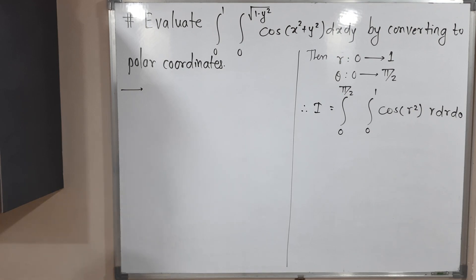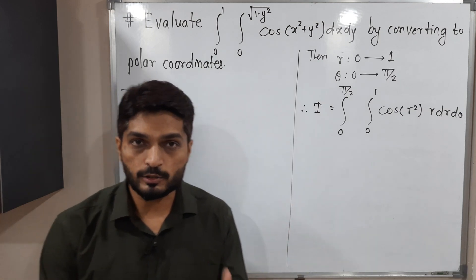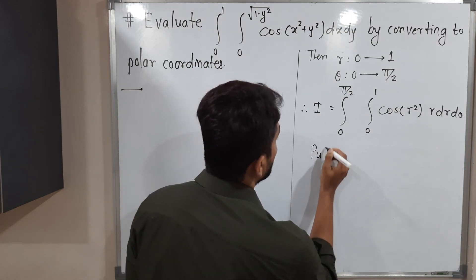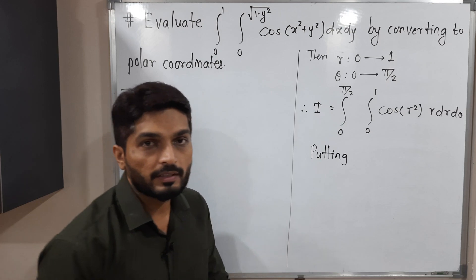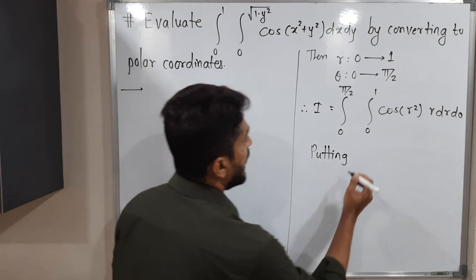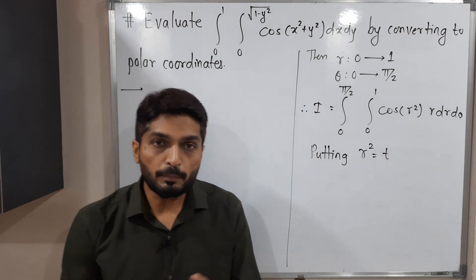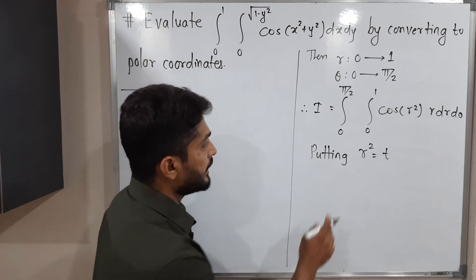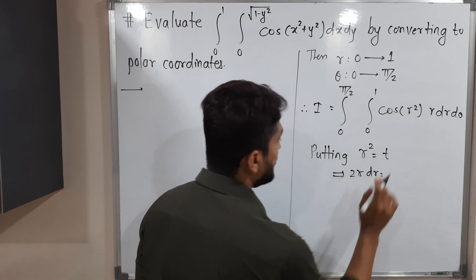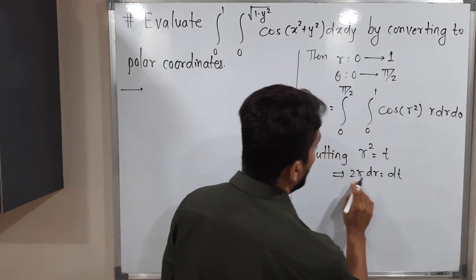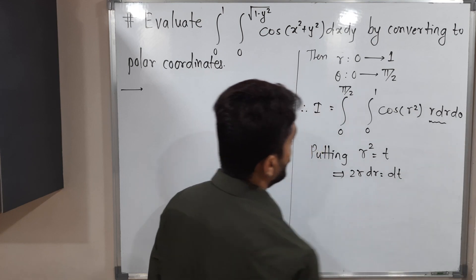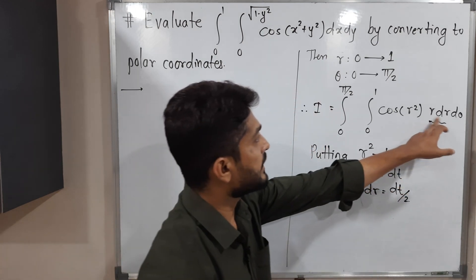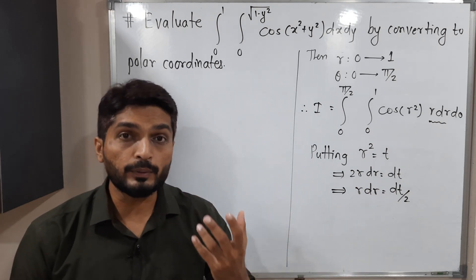We cannot solve this directly since R² is inside the cosine. We use the substitution t = R². Differentiating: 2R dr = dt, so R dr = dt/2. The old limits for R are 0 to 1. When R=0, t=0; when R=1, t=1. So the new limits are also 0 to 1.